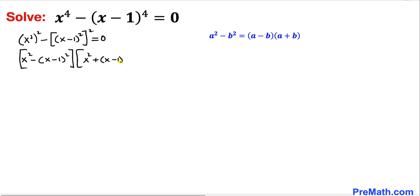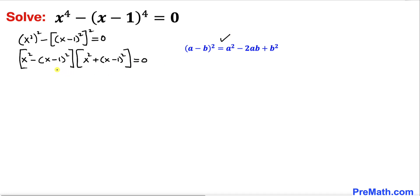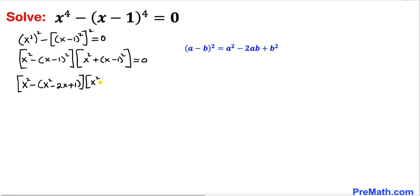Setting that equal to 0, now let's recall another identity: (a minus b) whole squared. We are going to apply it on both parts. So this equation can be written as: x squared minus (x squared minus 2x plus 1), times x squared plus (x squared minus 2x plus 1), equal to 0.